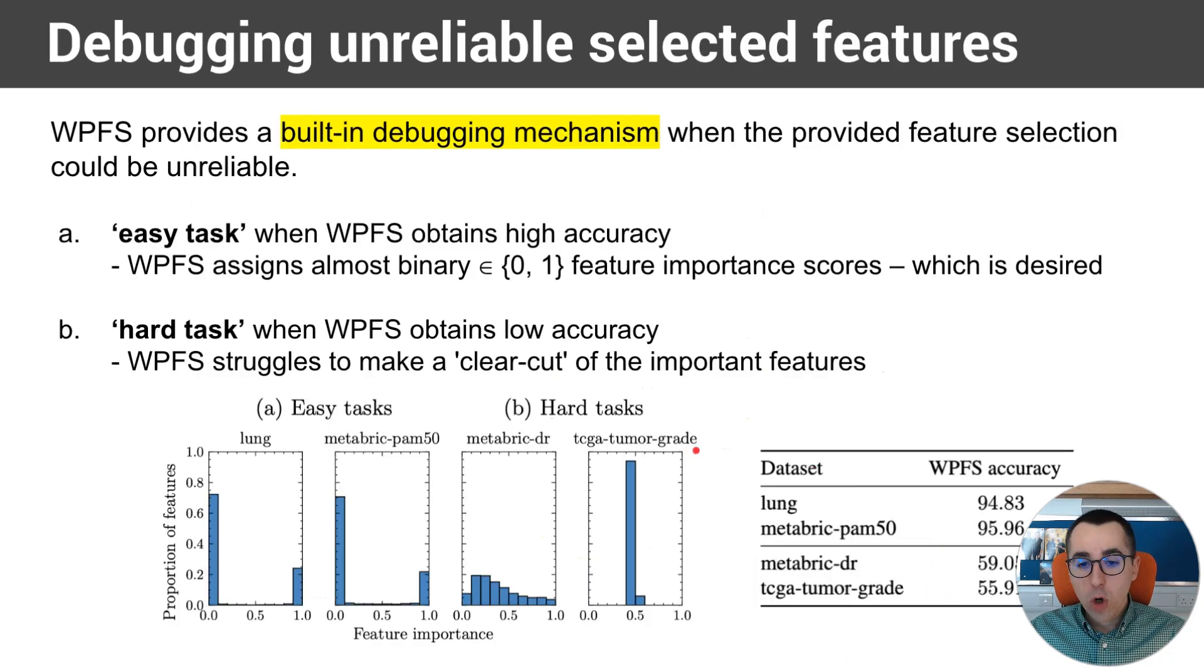We notice some good qualitative results with the feature importances. We looked at easy tasks and at hard tasks, and we briefly defined the easy tasks as tasks on which our method has very high accuracy, and hard tasks as those tasks on which our method has very low accuracy. Notice on the easy tasks, so when the method actually performs well, the feature importances are almost binary. So our method can clearly say that some features are useful and some features are not useful, while on the hard task, our method is unsure which features are actually important, and it assigns a 0.5 feature importance, so it doesn't know. We believe that this is great, because on the task when the method doesn't perform well, it should not have high confidence in the selected features.